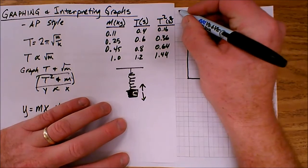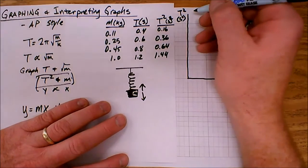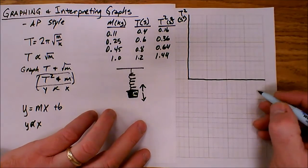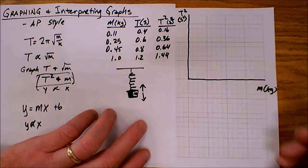And so I'm going to draw that here. T squared is going to go on the y-axis here. So this is T squared, units will be second squared. And then on my x, I've got mass in kilograms.